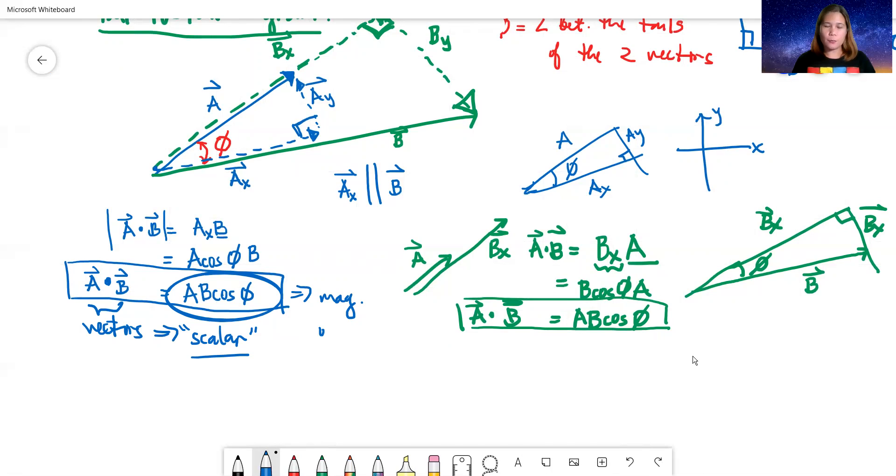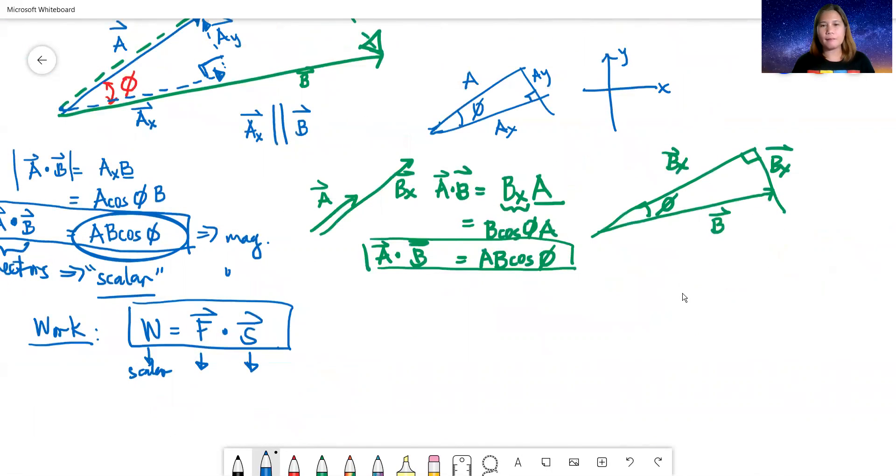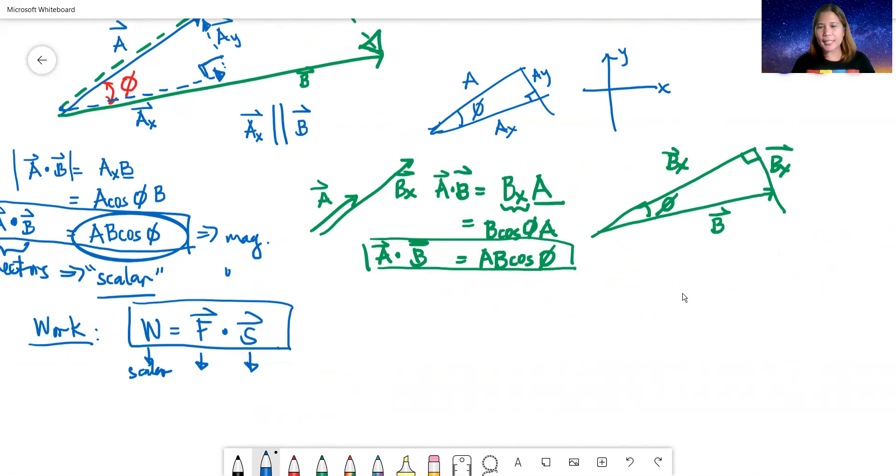In module 3, we will have a very specific application of the dot product, which is the concept of work. We will learn later that work is actually the dot product of the applied force and displacement. Force is a vector quantity, displacement is vector quantity, but the result, the work, is a scalar. In determining the value of A dot B, your final answer has no direction, no i-hat, j-hat, k-hat, because it's a scalar.